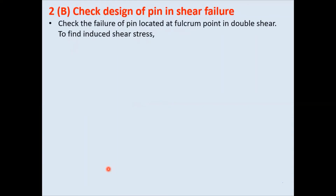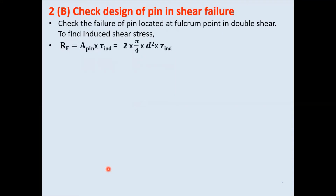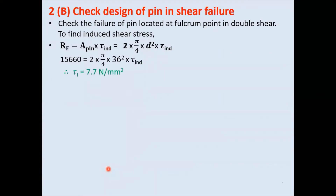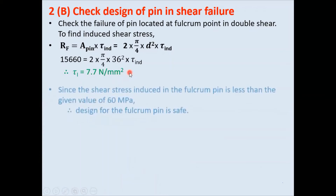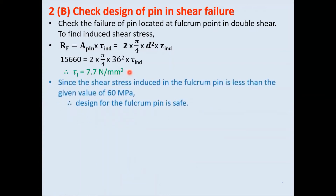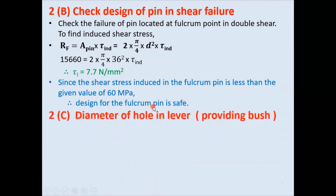For double shear failure: Rf = 2 × (π/4) × d² × τ_induced. Substituting all values, we find the induced shear stress. The permissible stress is 60 N/mm². Since induced stress is less than the permissible value, the design of the pin is safe.